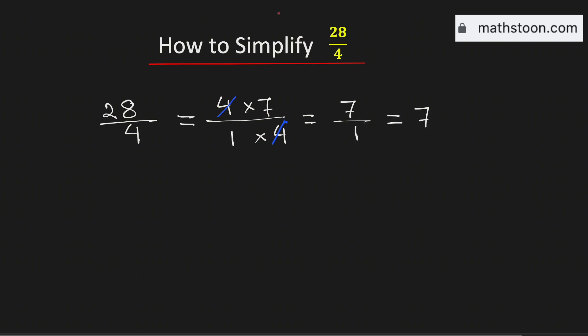Therefore, the fraction 28 over 4 simplified is equal to 7, and this is our final answer. Thank you for watching.